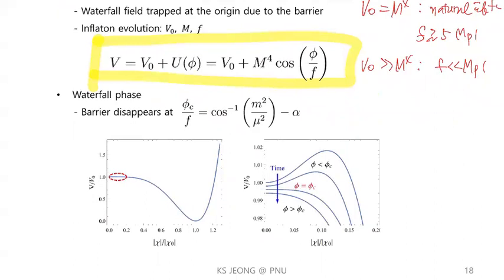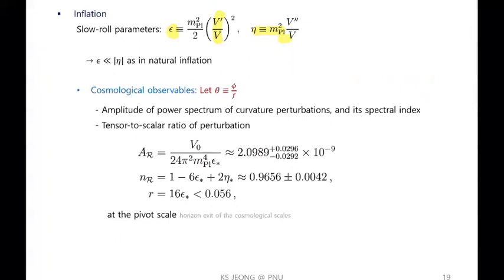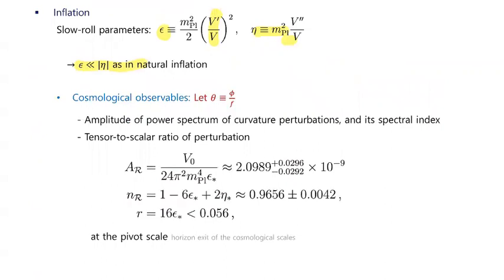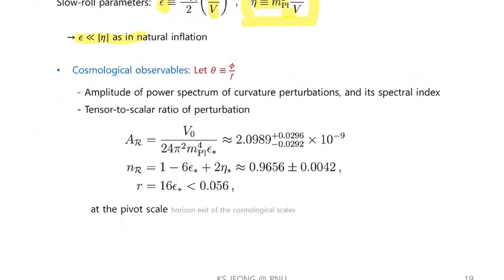This figure shows schematically how the barrier shrinks as the inflaton evolves. There is a barrier, but it shrinks and in the end disappears, and inflation is terminated almost instantaneously. The flatness of the potential can be parameterized by the slow-roll parameters ε and η. Epsilon is the slope and η is the curvature of the potential. As in natural inflation, ε is much smaller than η in size, so the slow-roll condition is determined by η in our scenario.